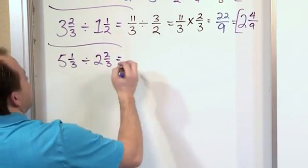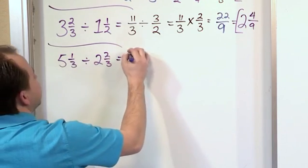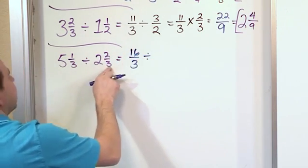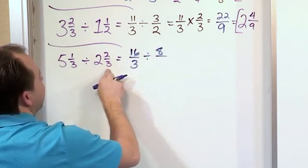We say we're going to convert this. So 3 times 5 is 15, plus 1 is 16, over the 3, divided by this guy. 3 times 2 is 6, plus 2 is 8, over this 3.